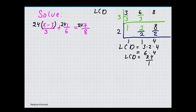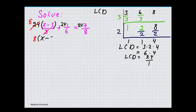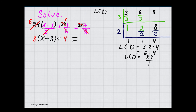On the next step, I am going to reduce each of the denominators with the least common denominator. 3 will go into 24 eight times, so we have 8 times the parentheses (x minus 3), plus 6 goes into 24 four times, giving 4, equals 8 goes into 24 three times, so it is 3 times 7.